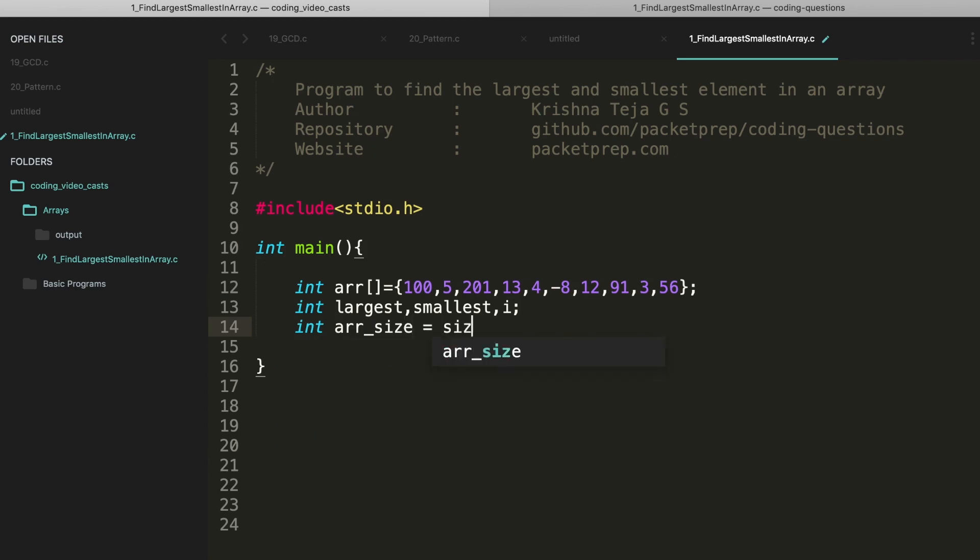Now here I do not define the size because probably tomorrow I may need a few more elements, so it's a good practice to find the size of the array. We can do it like this: array size. When we take the size of it, it basically counts the elements of this array and multiplies with size of each value. So size is integer, integer has 2 bytes space, so 2 times 10 is 20. But we don't need 20, we actually need only 10, so we will divide the size of int so that you get the exact size.